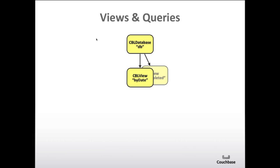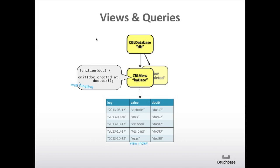Let's talk a little bit about views and queries. Each view is associated with a database, and a database can have multiple views. The view is essentially defined by a map function, which we'll discuss in detail. You can think of a view index looking something like a table with keys and values — the keys and values are emitted from your map function, and the document ID is emitted by the framework. It's kind of like an internal hidden field in the view, but with that document ID for every view row you can get back to the original document.